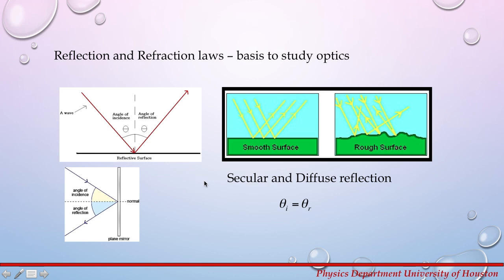The law of reflection states that θi is equal to θr. Specular reflection occurs at smooth plane boundaries. Reflection at rough irregular boundaries is diffuse reflection. The smooth surface of a mirror reflects light specularly, while the rough surface of a wall reflects light diffusely.